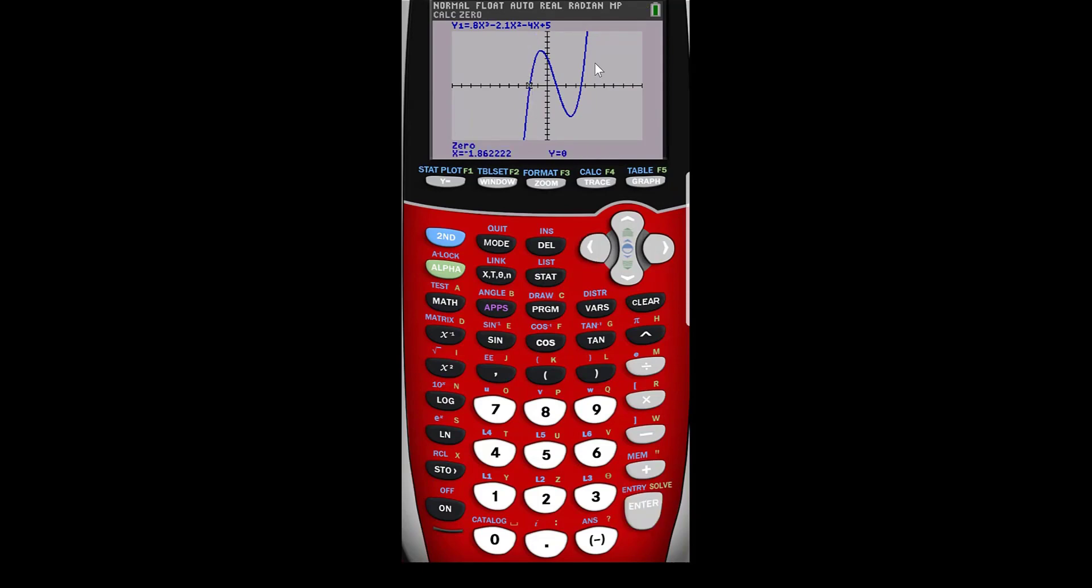So we need a left bound and a right bound and then you push enter. And so you see that we get negative 1.86. So that's going to be one of them and then we need to repeat that to get this zero and this zero.